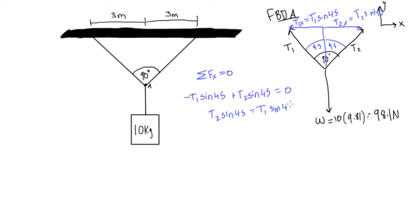So simply move this over, we'll get t2 sine 45 equals t1 sine 45, divide sine 45 by both sides, get rid of that, and we'll find that we have t2 is equal to t1, and we're going to simplify this a little, and we'll just say this is equal to t.